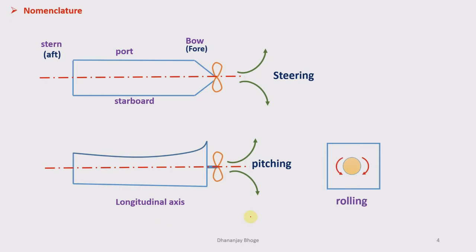Rolling of the ship is the oscillation or movement of the ship about the longitudinal axis, visible in side view. During rolling, the spin axis does not change its direction — it is fixed. So during rolling, there is no gyroscopic torque acting on the ship.